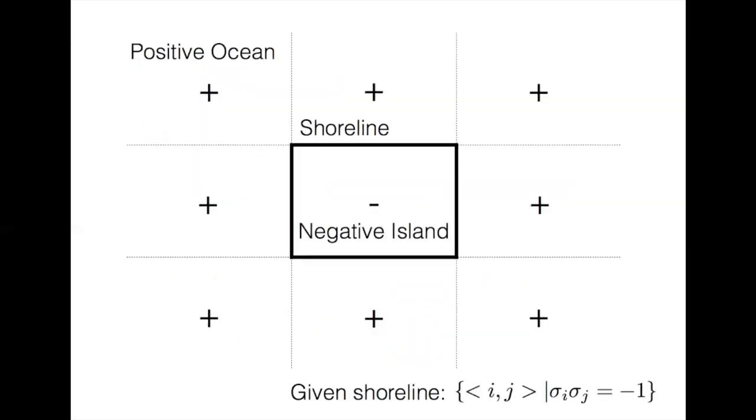Now here's a simple three by three example. We have a positive ocean, a negative island, and a shoreline that divides the two. Now a shoreline is a closed path of line segments connecting the midpoint of adjacent squares. Each segment of shoreline separates the positive ocean from the negative land. That is, for a given shoreline, we have a set of nearest neighbor bonds such that their product is negative 1.